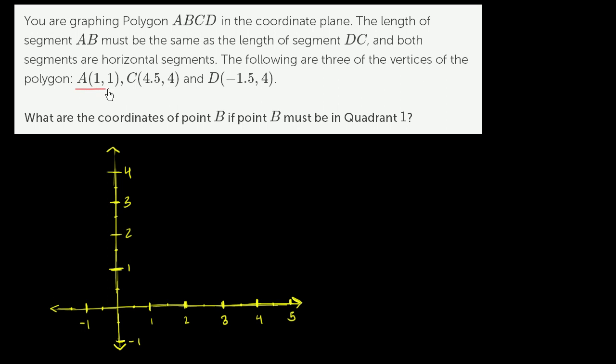Vertex A is at the point 1 comma 1. So 1 comma 1 puts us right over there. That is vertex A.